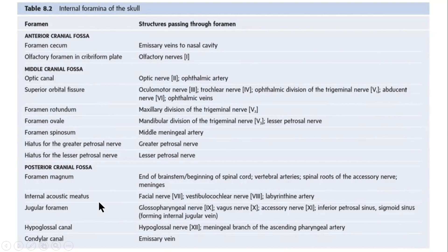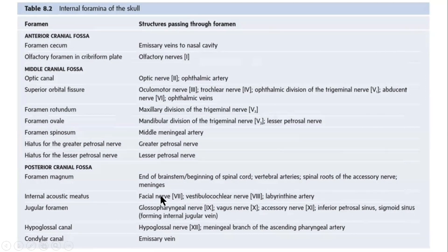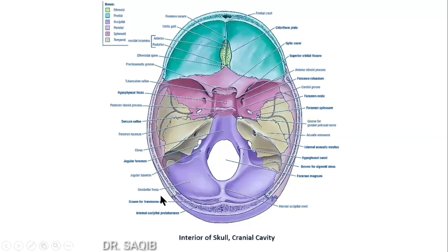The jugular foramen passes the glossopharyngeal nerve, vagus nerve, accessory nerve, the inferior petrosal sinus, and the sigmoid sinus, which forms the internal jugular vein. The hypoglossal canal passes the hypoglossal nerve and the meningeal branch of the ascending pharyngeal artery. The condylar canal passes emissary veins.